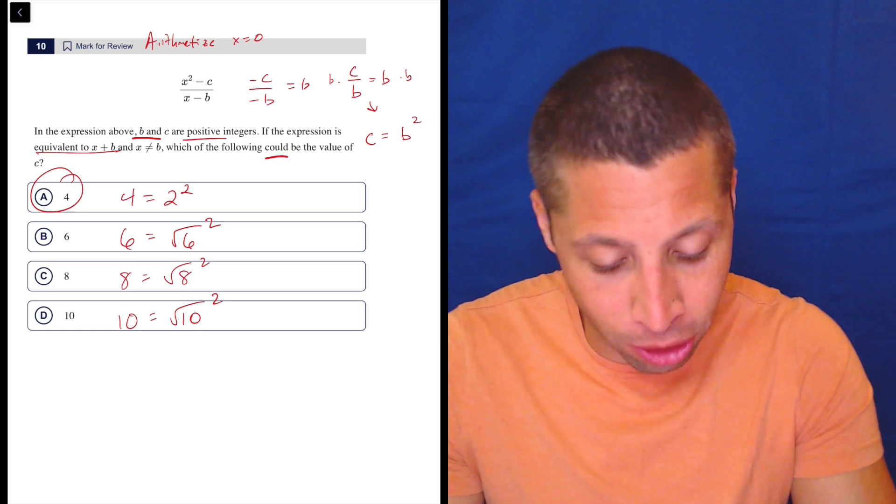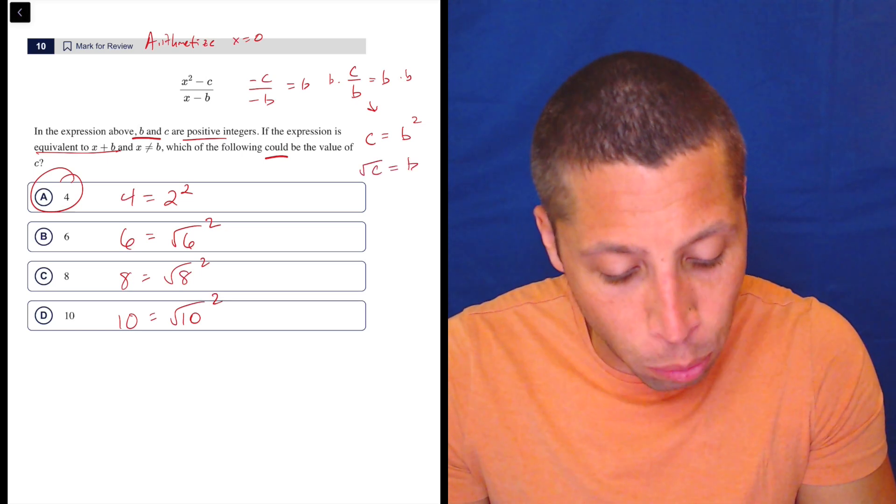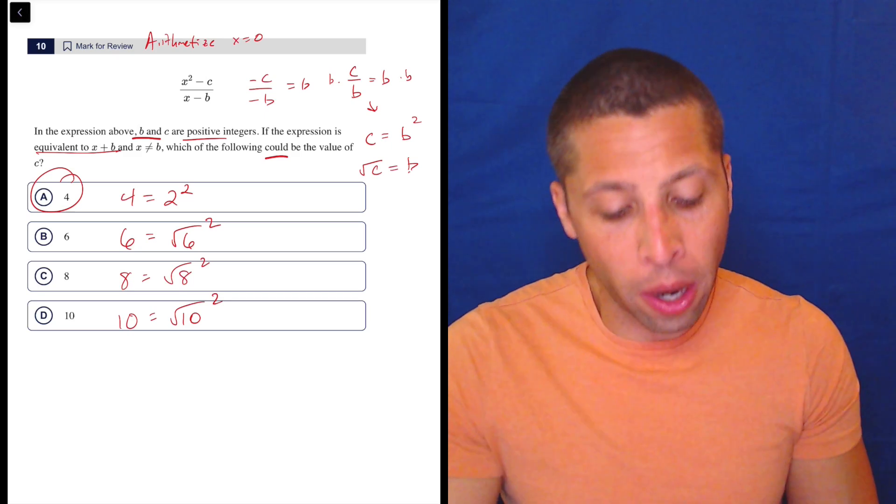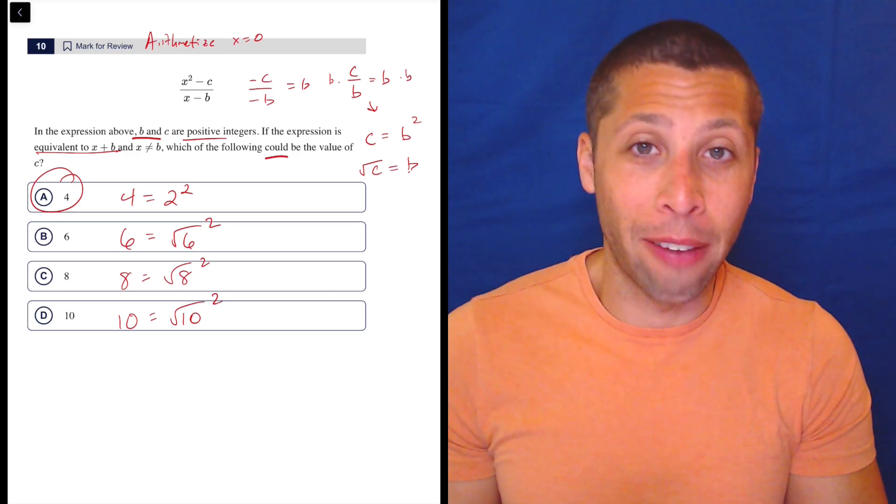And only choice A is going to involve a perfect square that could be square rooted. And so maybe I should have just done this, is another way to write this thing is the square root of C is equal to B. So in order for us to use the radical with the C and get a nice number, we would need to have a perfect square.